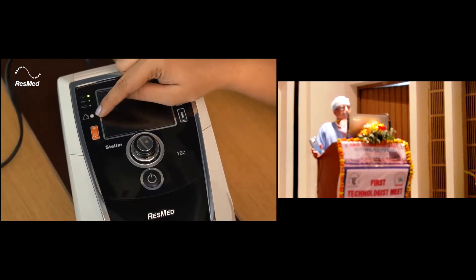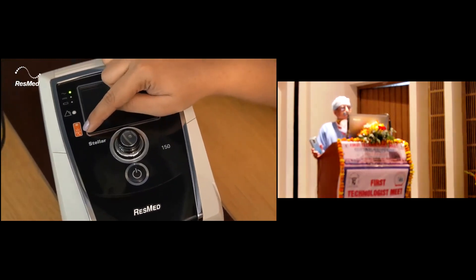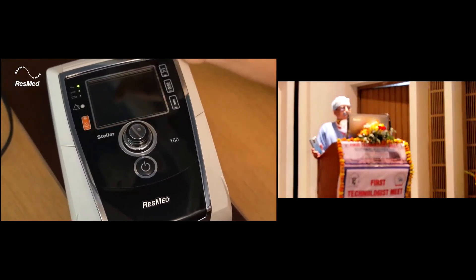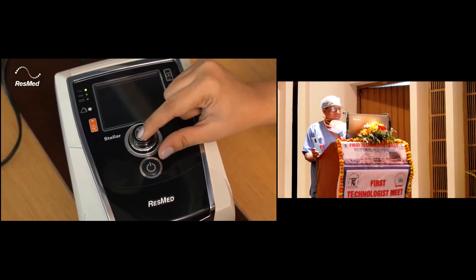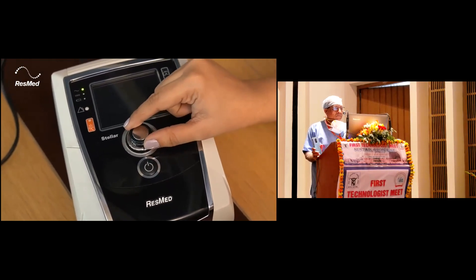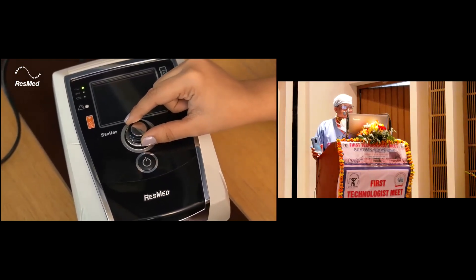If there are any alarms, this will be lit, and if you want to mute the alarm, this is the alarm mute button. Over here we have the dial which can be rotated or pressed, and that's how we use it to change the settings.